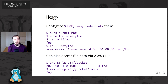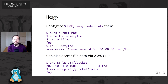S3FS usage is really simple. You configure your S3 credentials, then run S3FS with a bucket and mount point, and you can interact with it as if it's a local file system. In this example, we write the file foo, read it, and stat it to see correct metadata. You can also interact with files through other S3 applications — here using the AWS CLI, we can see foo exists, it's four bytes, and we can round-trip the data.